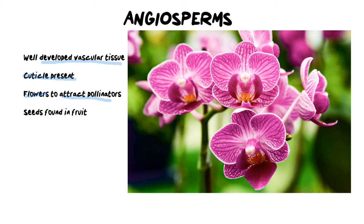The final thing that's unique to angiosperms is that their seeds are found in fruit, and this is also a great delivery mechanism for seeds. An animal will come along, eat the fruit, swallow the seeds, and then defecate the seeds somewhere else, dropping them a little way away, which allows that angiosperm to grow somewhere else.